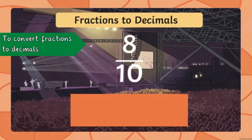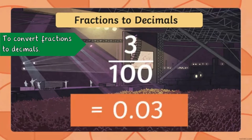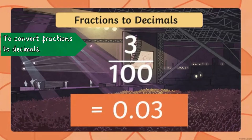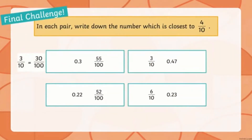When there was no hundredths column, there was only one decimal place. So this is going to be 0.8. And 3 one-hundredths is 0.03. Well done if you got that one right.